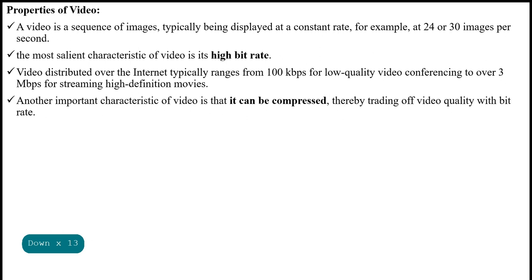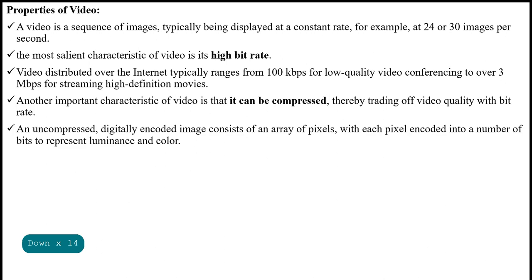Another important characteristic of video is that it can be compressed, thereby trading off video quality. An uncompressed digitally encoded image consists of an array of pixels, with each pixel encoded into a number of bits to represent luminance and color. A pixel — short for picture element — is the smallest unit of a digital image or graphic that can be displayed on a digital display device. Pixels are combined to form a complete image, video, text, or any visible thing on a computer display.